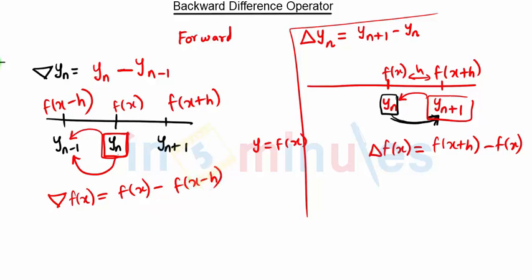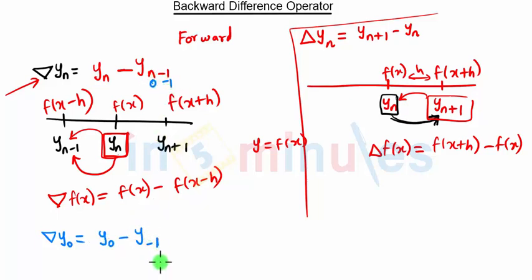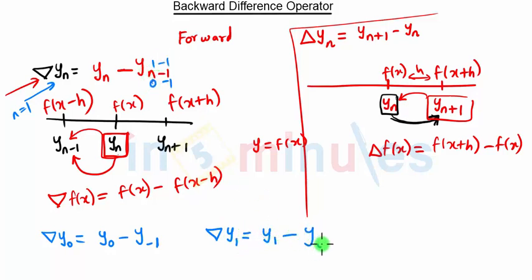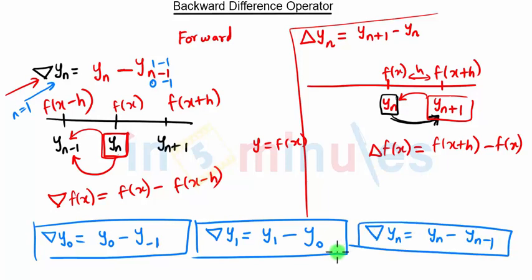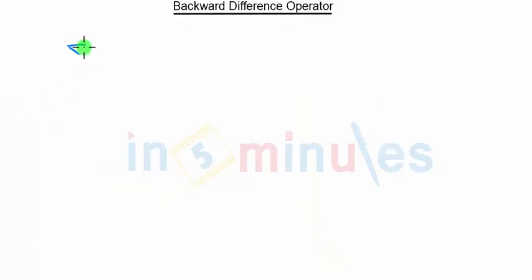Let's say we put n = 0: we get ∇y(0) = y(0) - y(-1). Similarly, when we put n = 1, we get ∇y(1) = y(1) - y(0). From these two examples, we can conclude that in general: ∇y(n) = y(n) - y(n-1).